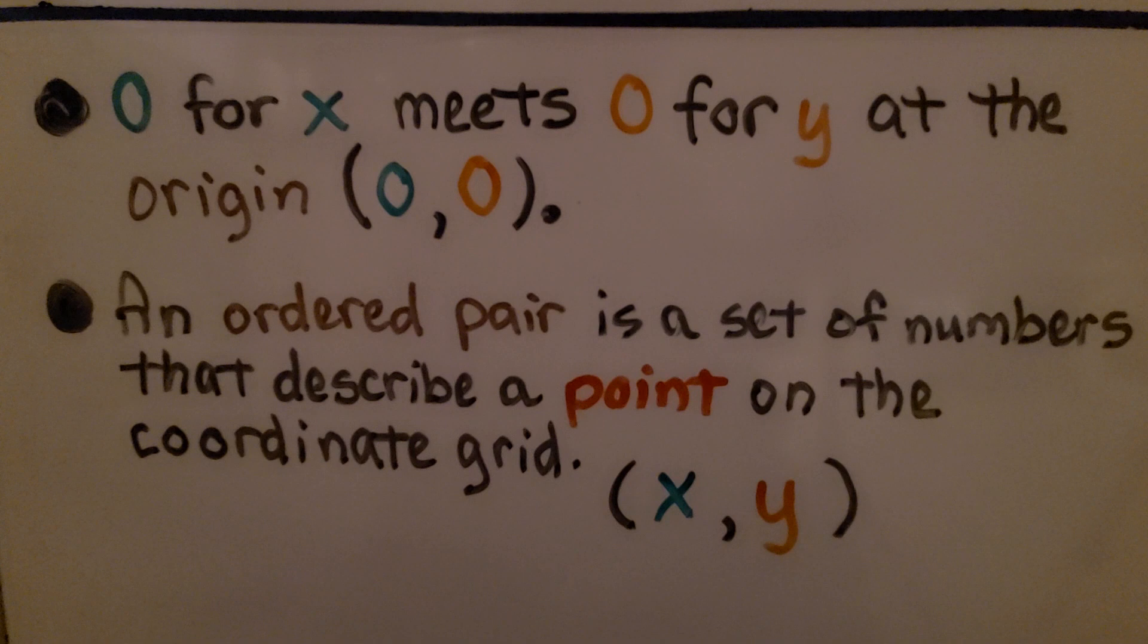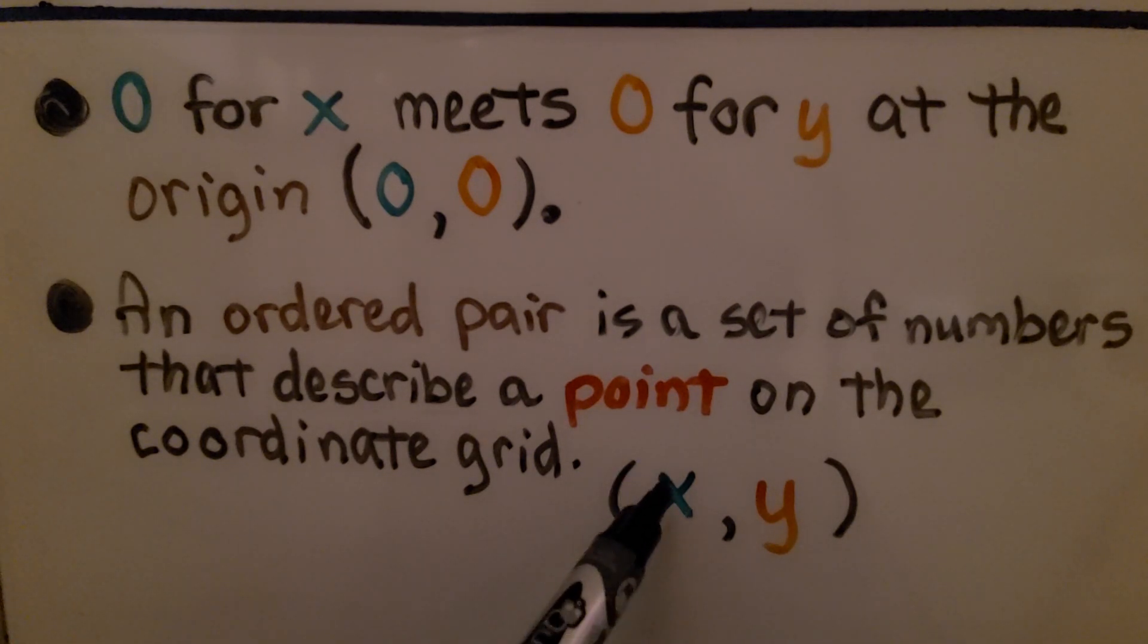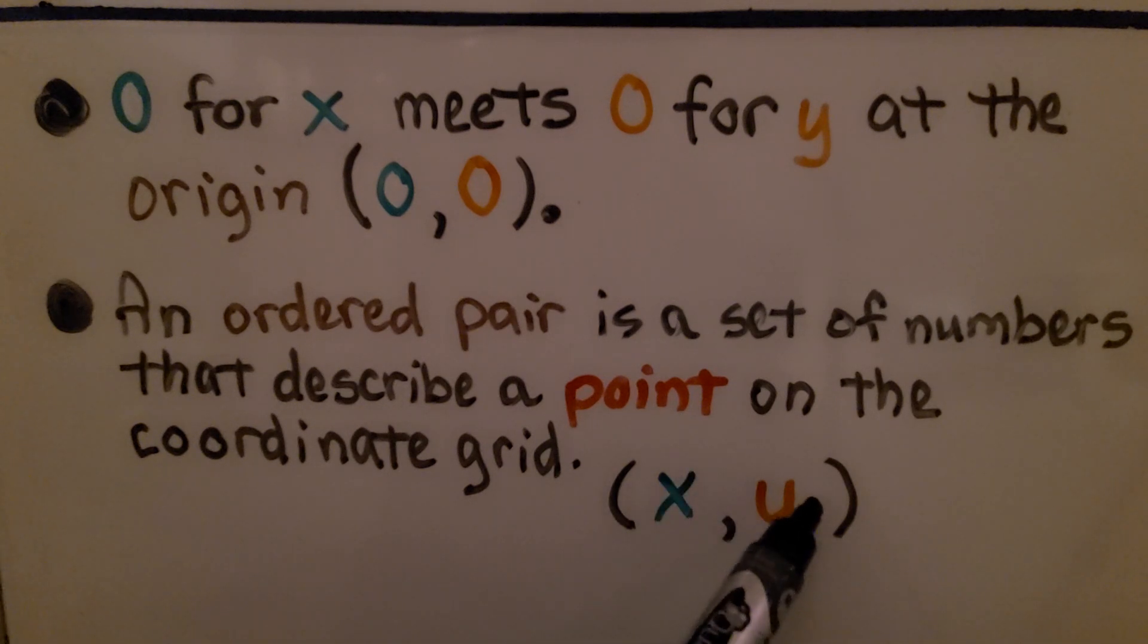So 0 for X meets 0 for Y at the origin, (0,0). An ordered pair is a set of numbers that describe a point on the coordinate grid, and we have X then Y. If you want to remember which is first and which is second, they're in alphabetical order, like X, Y, Z.